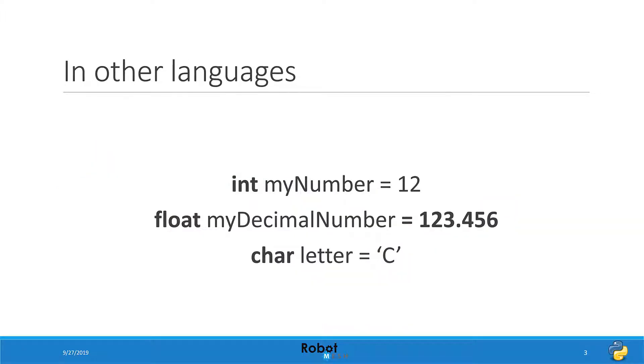In other languages such as C, C++, and Java that are strongly typed, you have to declare the data type during the initialization of the variable. Also, the type of the variable cannot change throughout the program's execution. In this strongly typed example, we see an int for integer, a float for a decimal number, and a char for character type preceding the variable name.